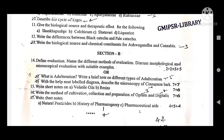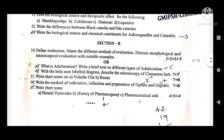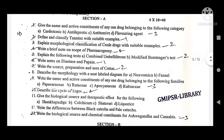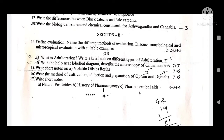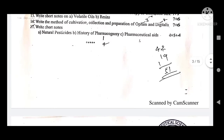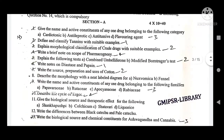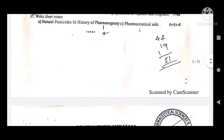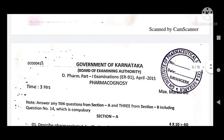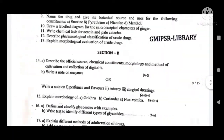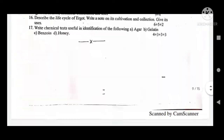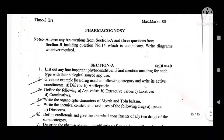Keep in mind: there is one 15 marks question, and 10 questions of 4 marks each. Section B has mixed 14 and 13 mark questions. The questions are very easy and direct. Even if they ask indirectly, the question is related to previous papers. So just prepare with previous year Pharmacognosy question papers — 2016 December and 2015.